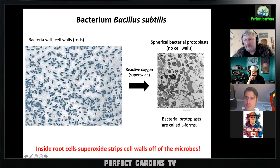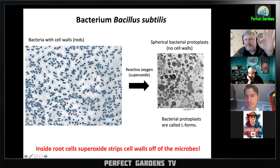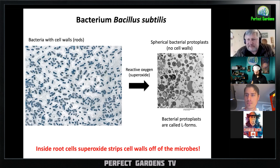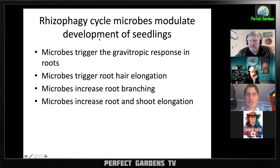They've known about these a long time. Even in plant cells they knew about these L-forms — called L-forms because they were discovered at the Lister Institute. These are bacteria without their cell walls. Back in the 1970s, people were seeing these L-forms in plants and talking about them, but they didn't connect them to the rhizophagy cycle or nutrient acquisition. They were known to be endophytic or symbiotic forms of bacteria.